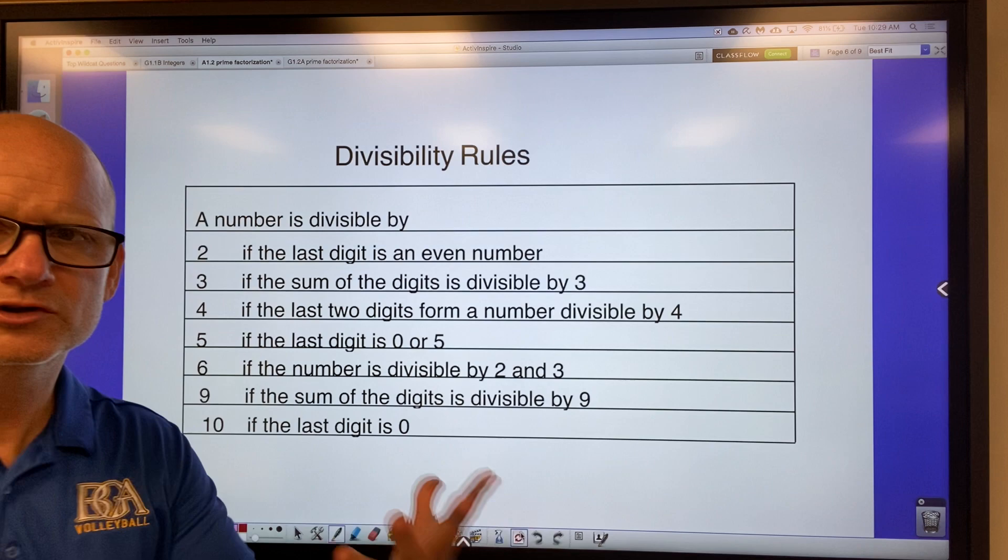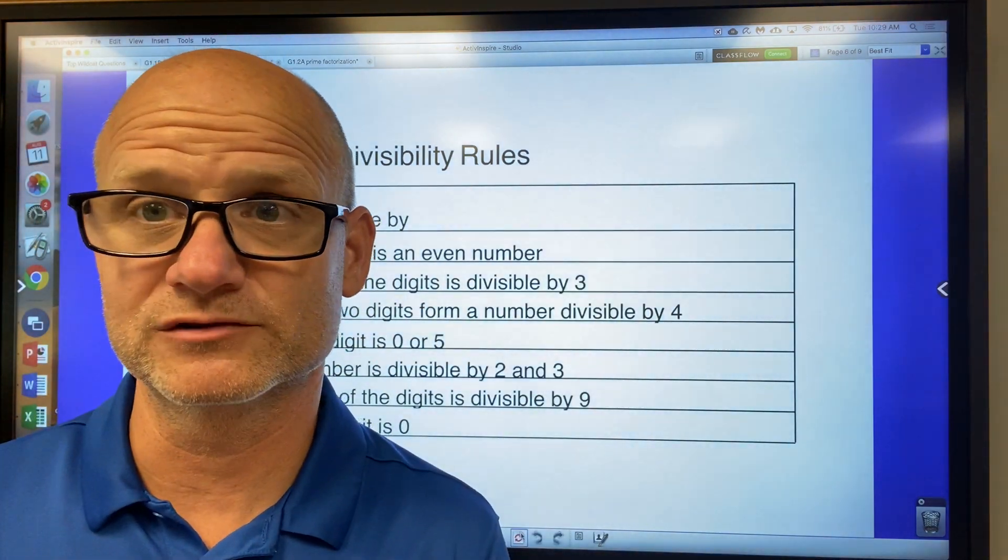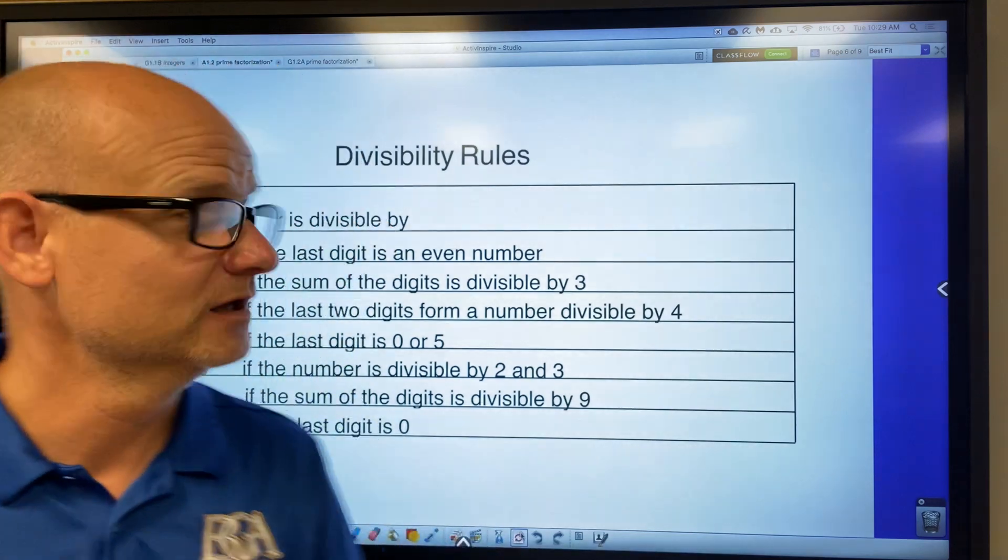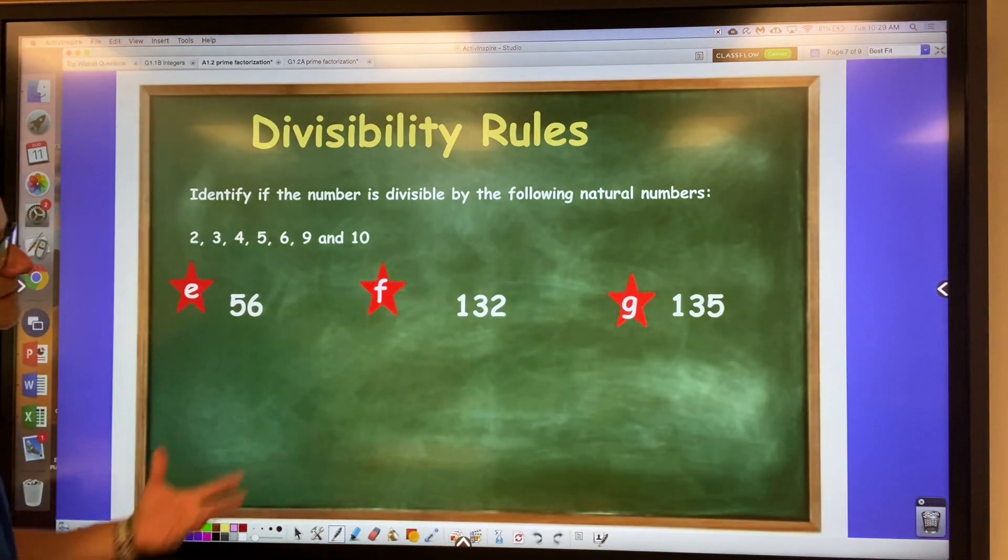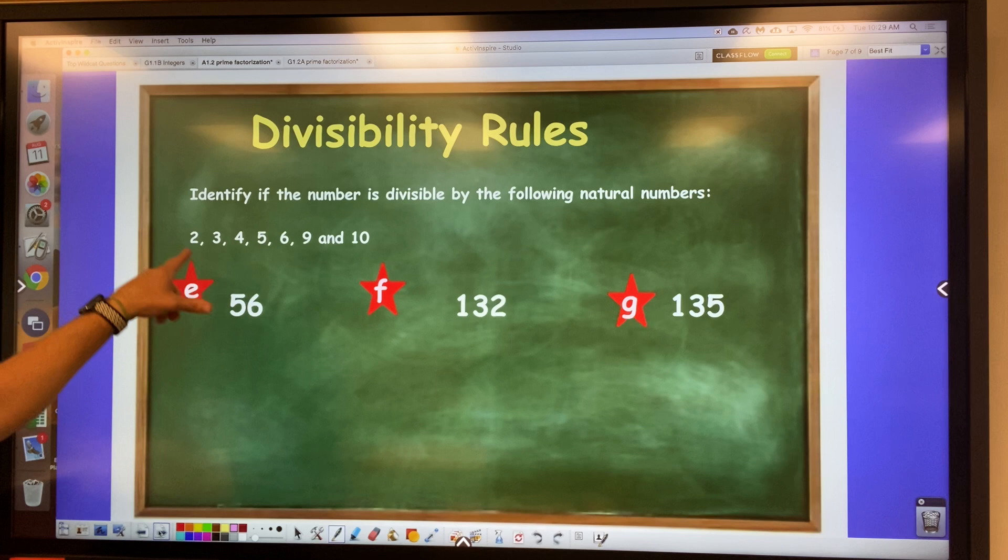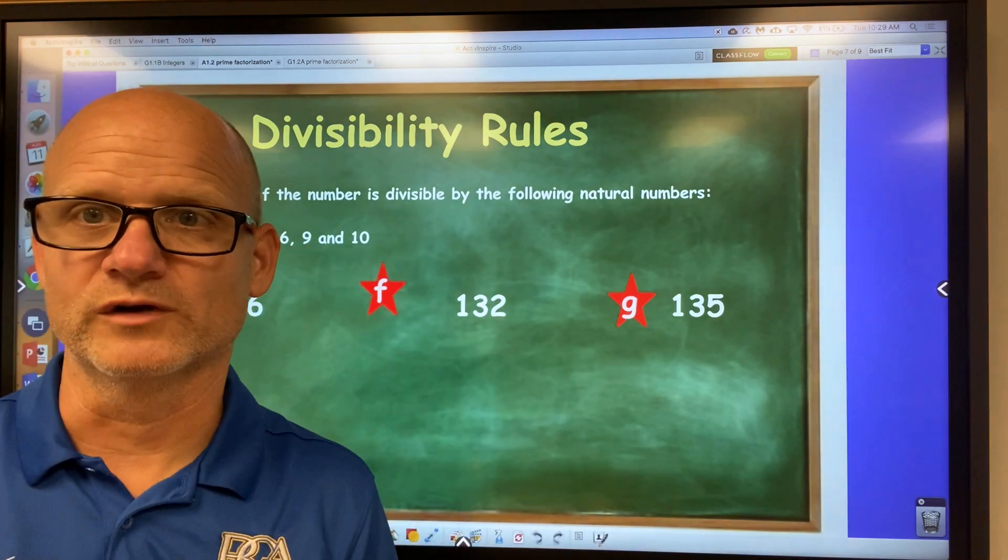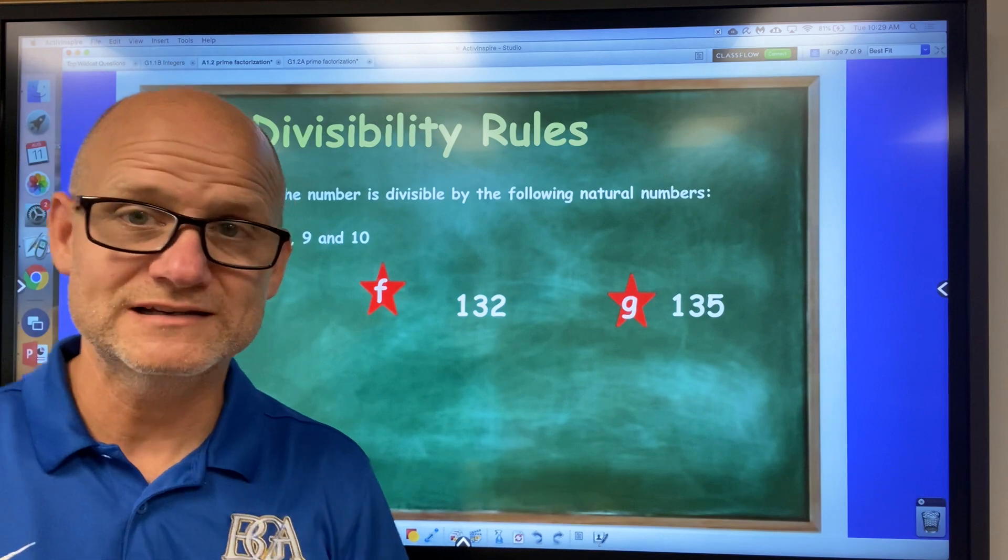Some of you guys might want to, if you're new and you've never had this before, you might want to just write this down. It might help you. But the thing I want you to do now is, again, just tell me, see these three questions here, E, F, and G? Tell me, you know, looking at these numbers 2, 3, 4, 5, 6, 9, and 10, 56 is divisible by which of these? And you're going to have more than one answer. I mean, you should. And then look at 132 and 135. And then just write down, is 132 divisible by 2? If yes, you write 2 down.